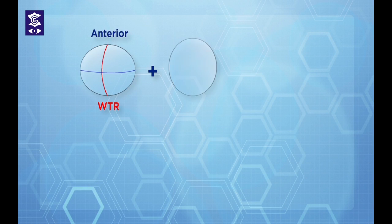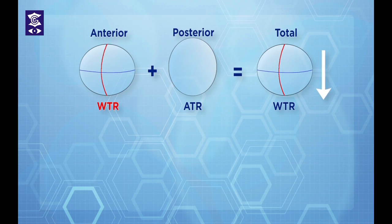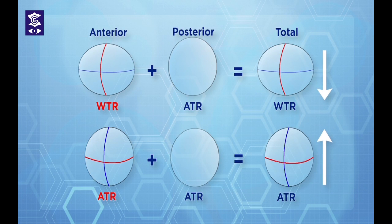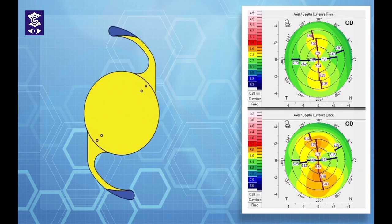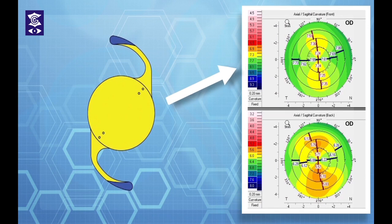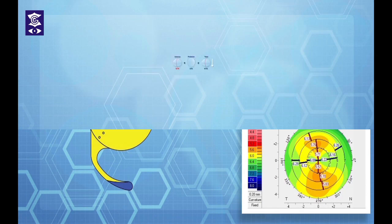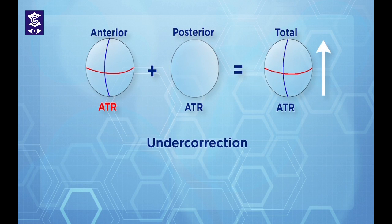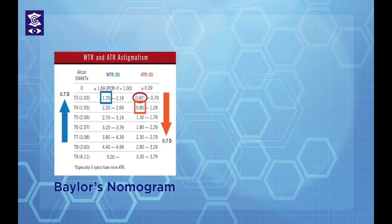The vertically steep posterior surface, on the contrary, exerts an against-the-rule effect on the anterior cornea. Thus, if the anterior surface has with-the-rule astigmatism, the posterior against-the-rule tendency reduces it; and if the anterior surface has against-the-rule astigmatism, it adds to it. Therefore, toric IOL selection based on anterior curvature alone would lead to overcorrection in with-the-rule eyes and undercorrection in against-the-rule eyes.